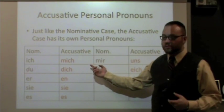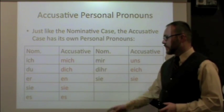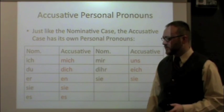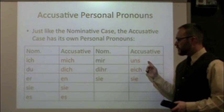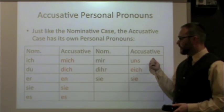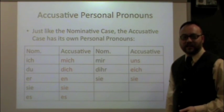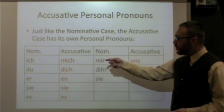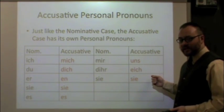So the accusative personal pronouns are: mich, dich, en, sie, es, uns, eich, sie. Remember, what is the job of a personal pronoun? As we covered before, they replace nouns. Since these are the accusative personal pronouns, they're going to replace the direct object — where the nominative ones replace the subject, these replace the direct object.